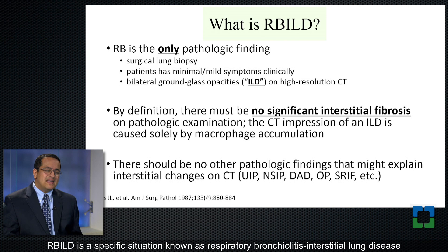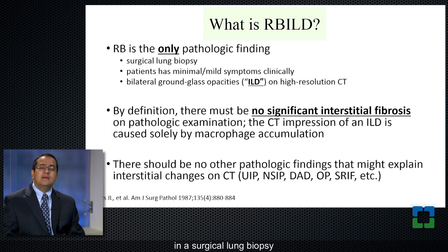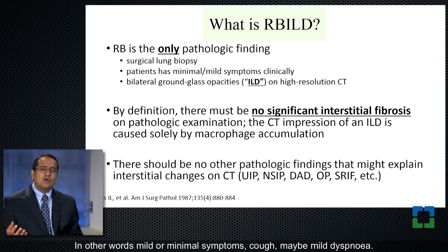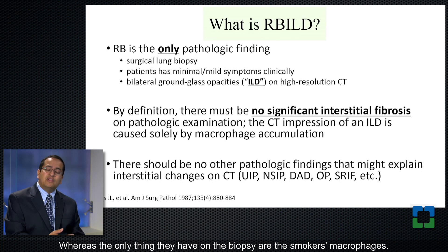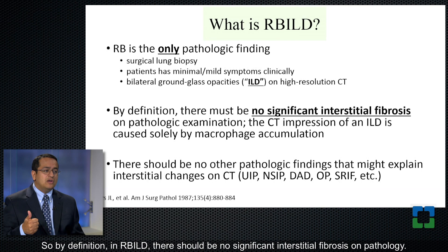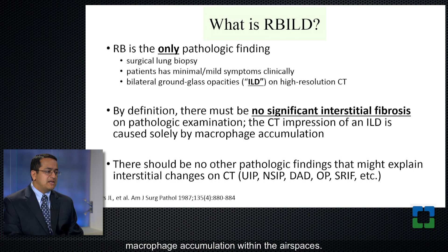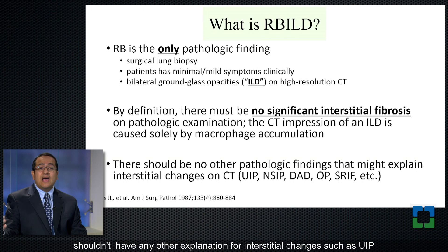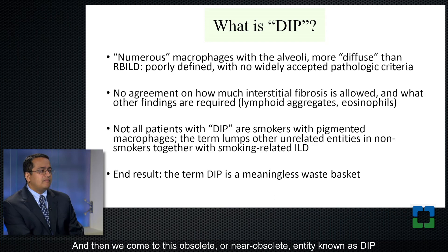What is RBILD? RBILD — respiratory bronchiolitis interstitial lung disease — is a specific situation where respiratory bronchiolitis is the only pathologic finding in a surgical lung biopsy in a patient who seems to have interstitial lung disease clinically: mild or minimal symptoms, cough, maybe mild dyspnea, and bilateral ground glass opacities. By definition, in RBILD there should be no significant interstitial fibrosis on pathology — that's a very important point. The CT impression of interstitial lung disease is caused solely by macrophage accumulation within the airspaces. RBILD is also a diagnosis of exclusion — you shouldn't have any other explanation for interstitial changes such as UIP, NSIP, DAD, or organizing pneumonia on pathologic examination.